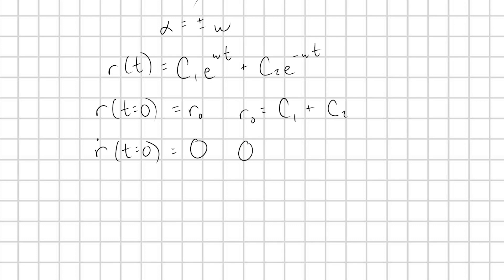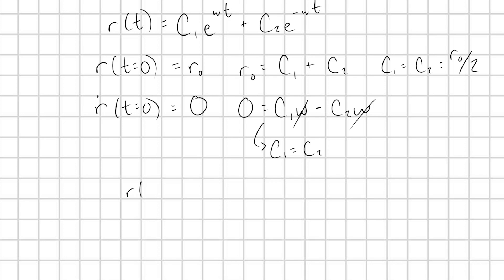And then this second condition here, zero is equal to, we have to take a little derivative, that's fine, we're going to have c1 omega, and we're going to have minus c2 omega, once we take those derivatives and plug in zero for t. We can see that c1 and c2 are going to be equal from this condition here, and if they're equal, then we're going to have c1 is equal to c2 is equal to r naught over 2. You see that very clearly. And so now for this set of initial conditions, we're going to have that r of t is equal to r naught over 2 times e to the omega t plus e to the minus omega t. This is if the bead starts at some arbitrary radial position on the rod with zero radial velocity.